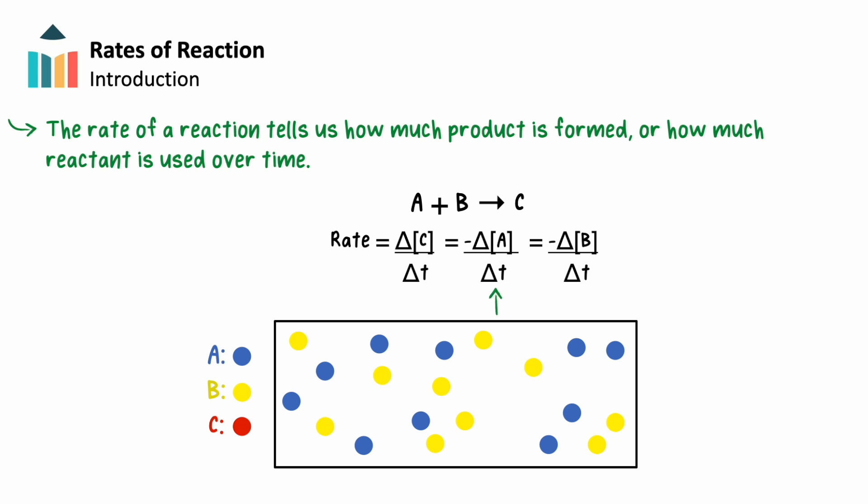Two, by taking the decreasing change in the concentration of A divided by the change in time, where the negative represents the consumption of reactant A. Or three, taking the decrease in the change of concentration of B divided by the change in time.